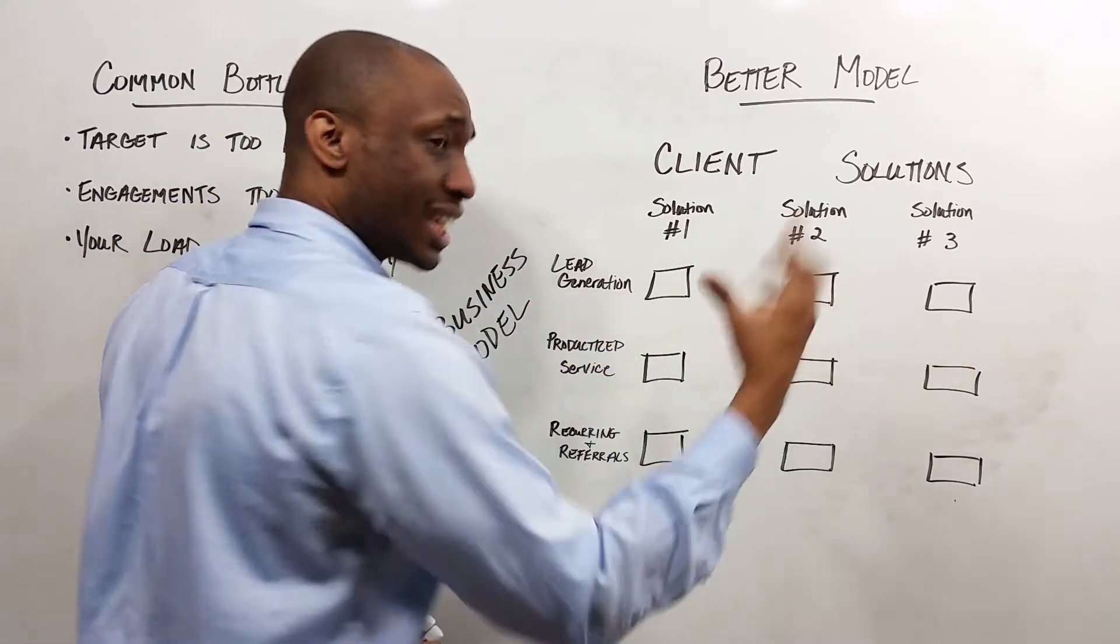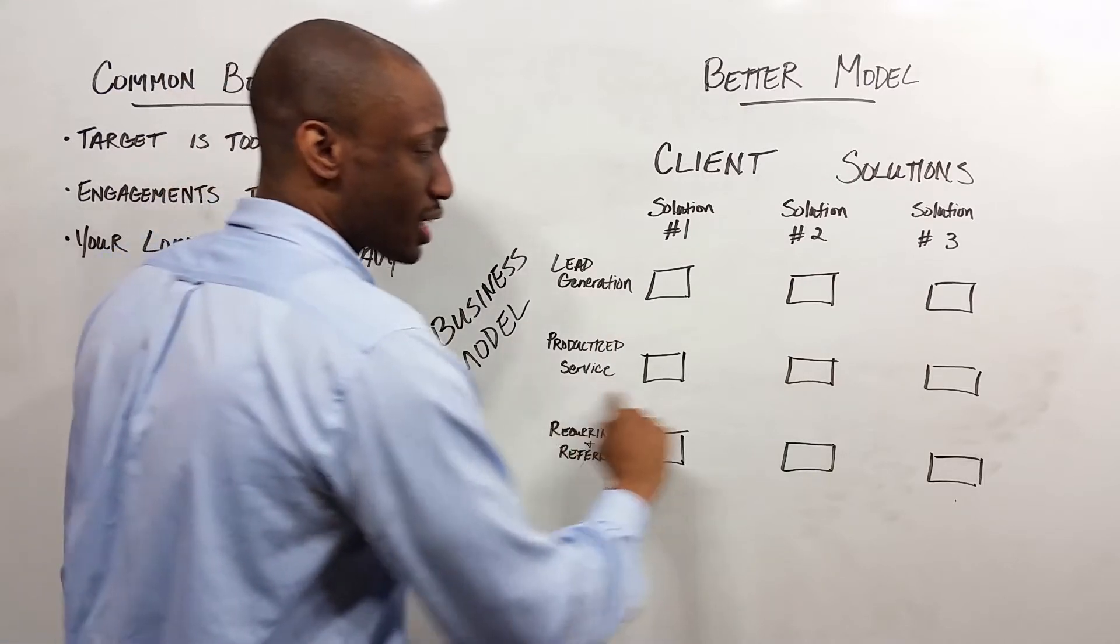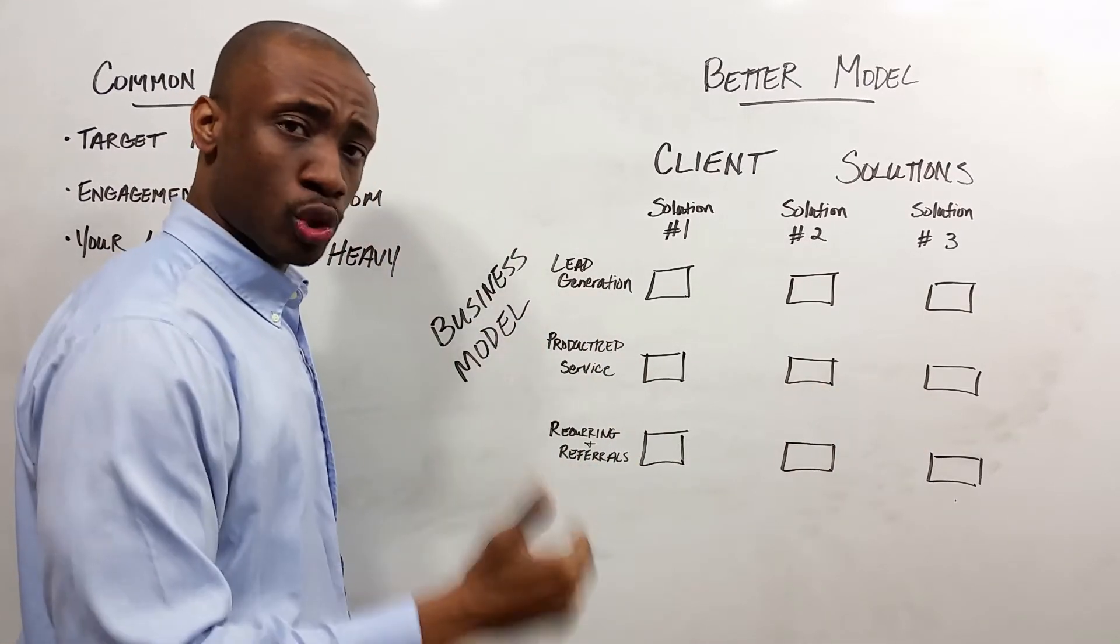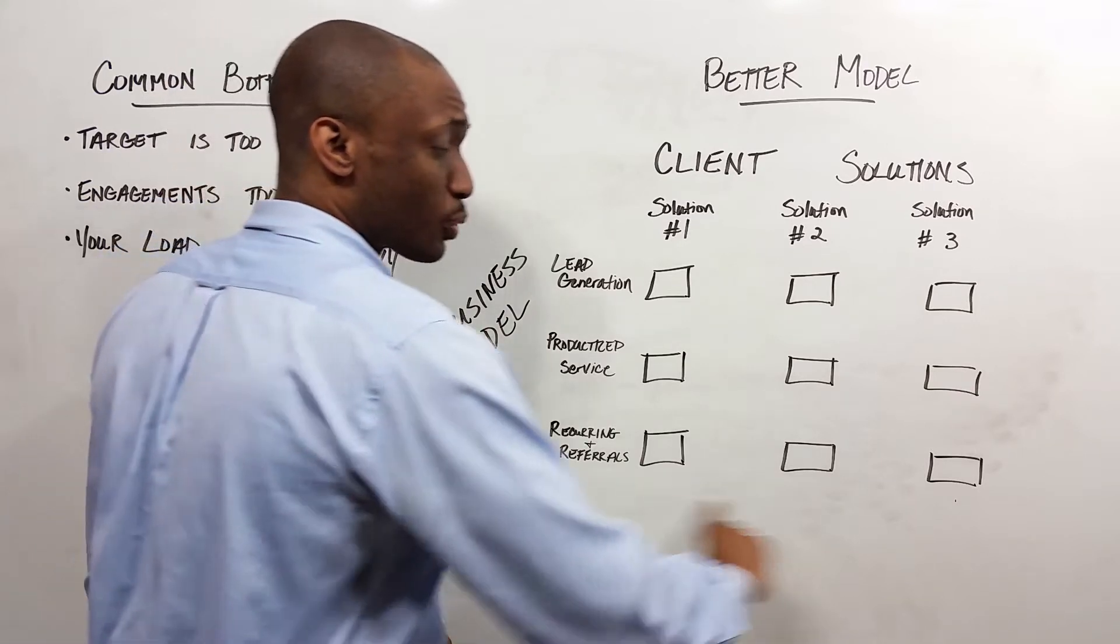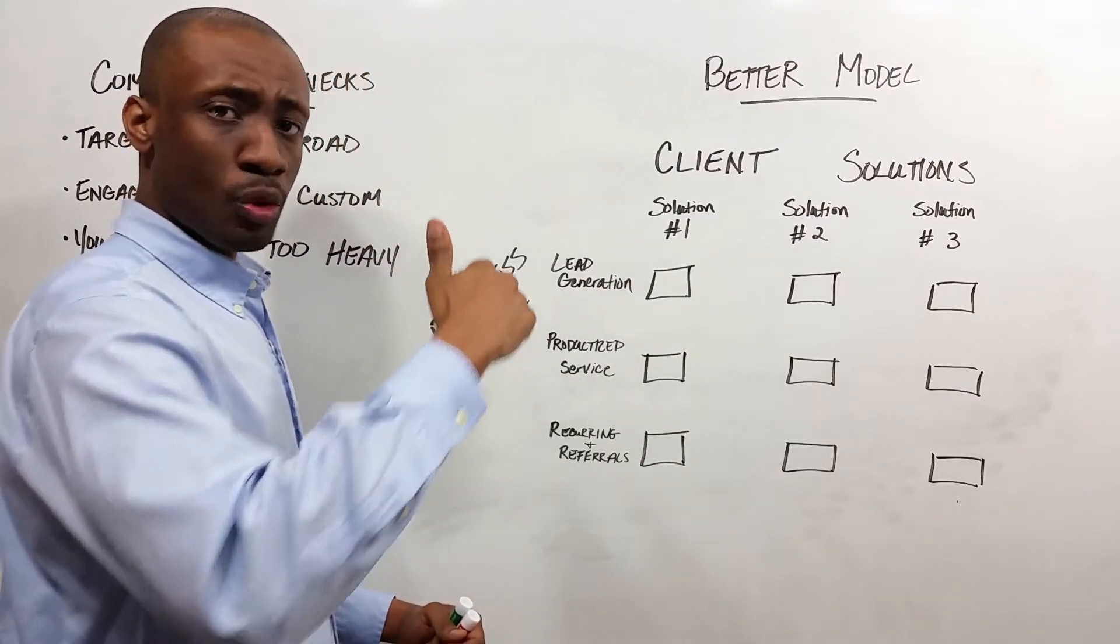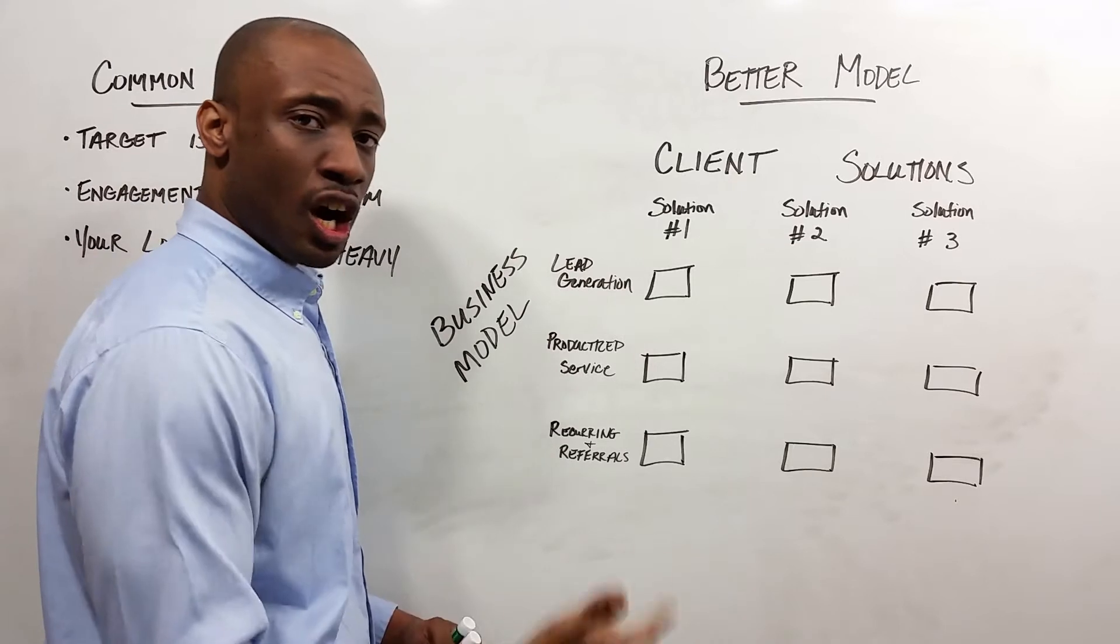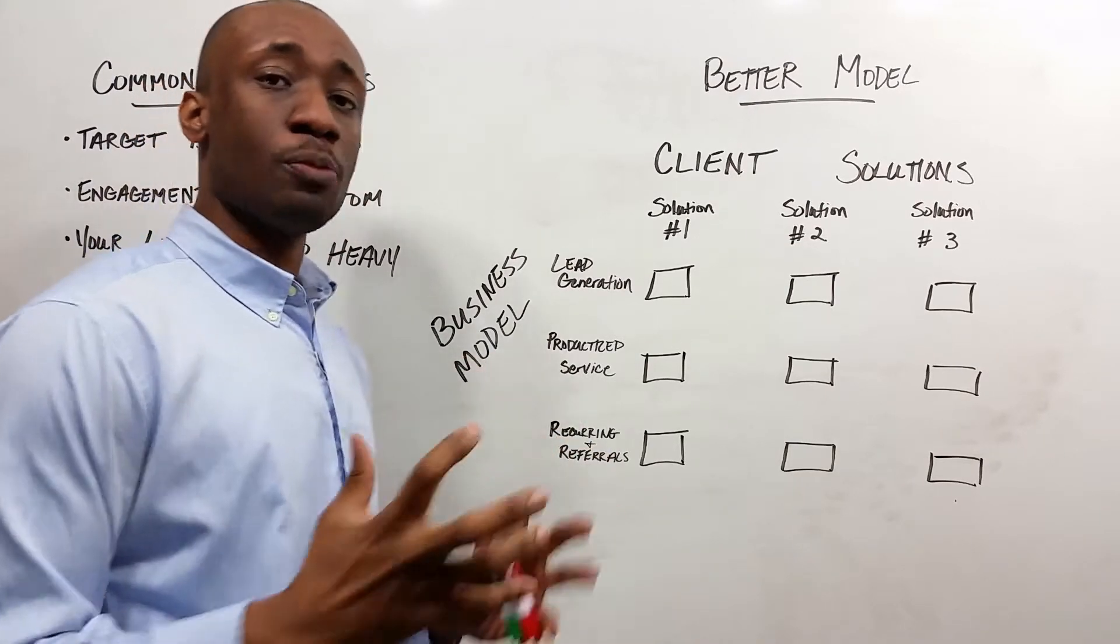What has to be done so that you can deliver on these things well? There are three elements: lead generation, getting new leads in; the productized service, specifically how you solve the problem, that number of steps; and third is recurring and referrals, which generates the machine of your business. Let's walk through this and how you might apply it.